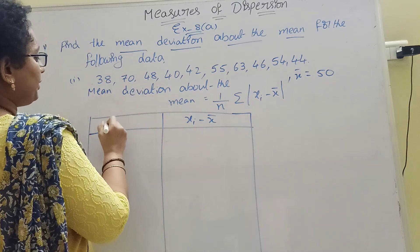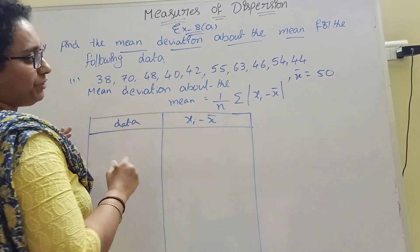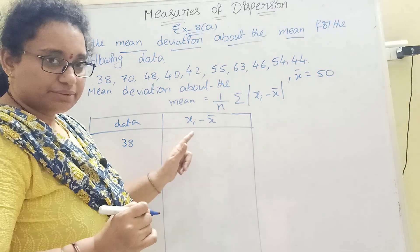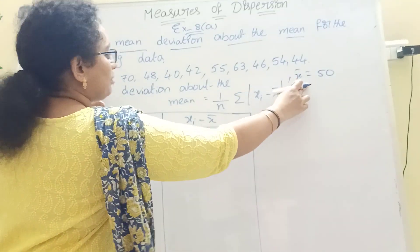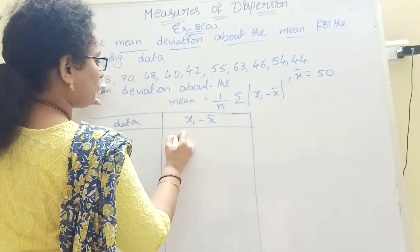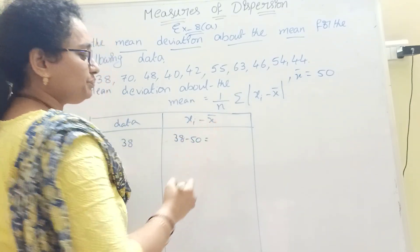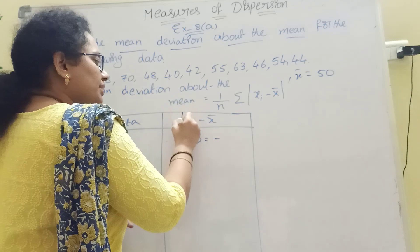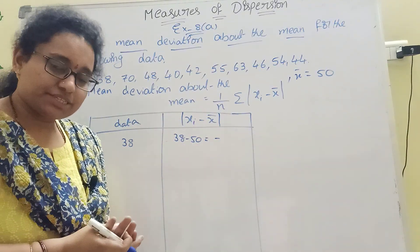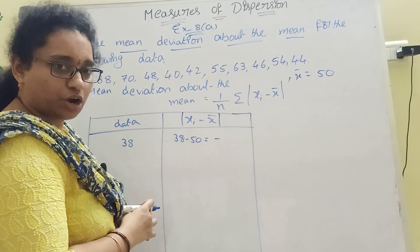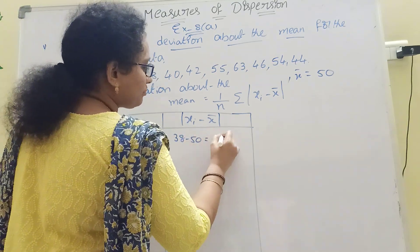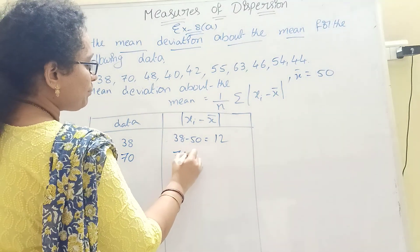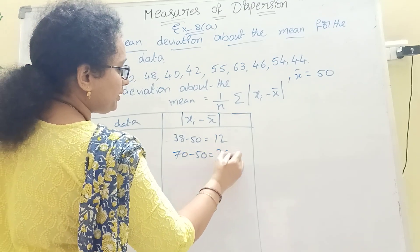Now let's calculate |xi − X̄| for each value. For the first number, 38 − 50 gives a negative result, but because there is a modulus, we take the bigger minus smaller: 50 − 38 = 12. Next, 70 − 50 = 20.